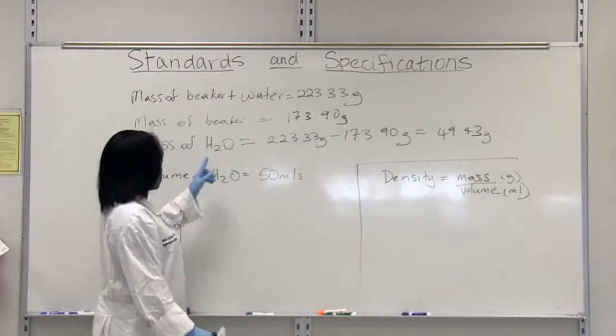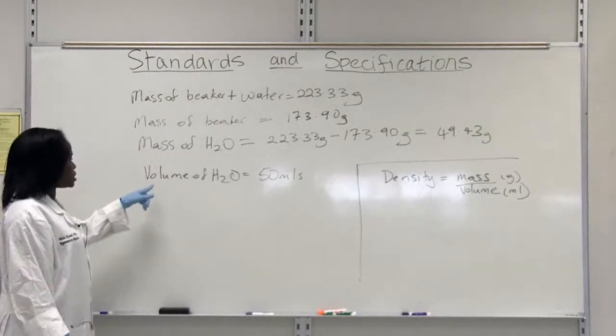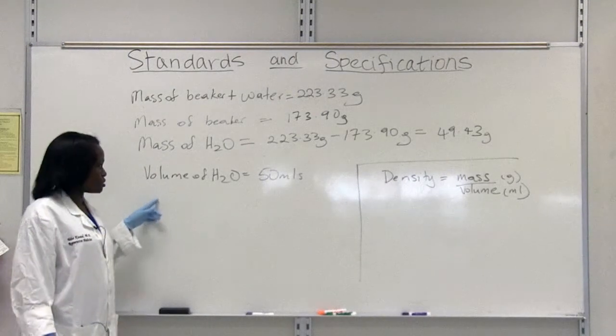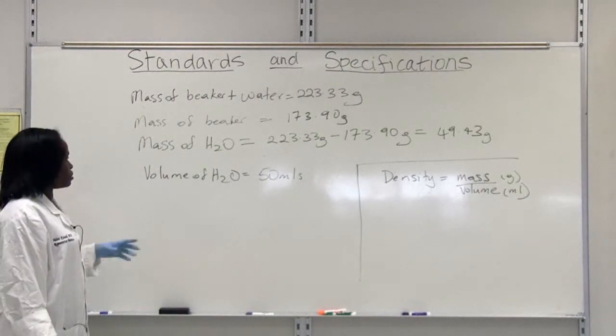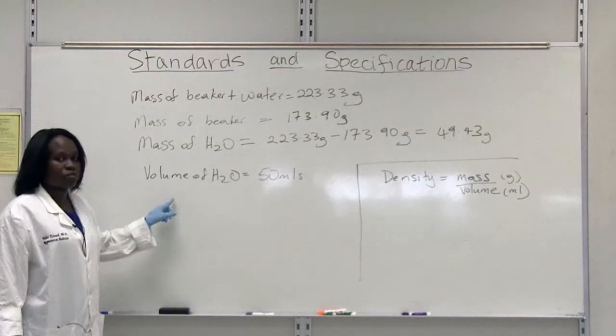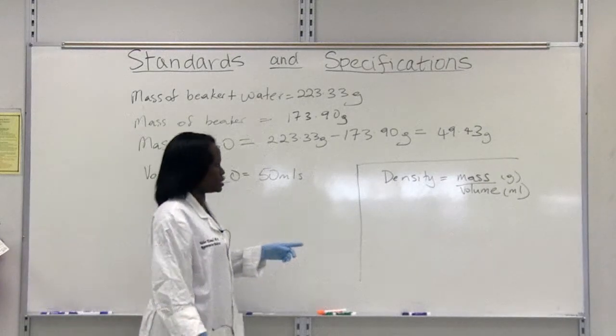So we know our mass of water. We also added a specific volume of water, which was 50 mils. So we know our weight of the water. We know the volume of the water. So therefore, we can calculate the density.